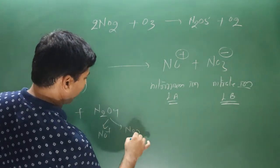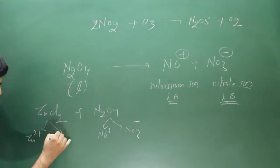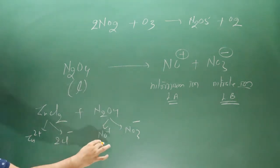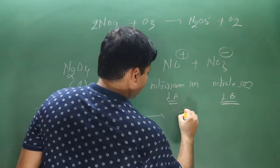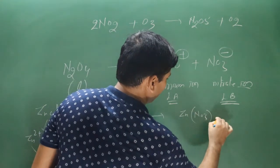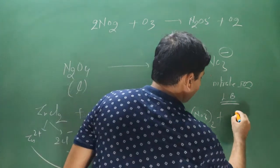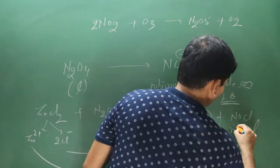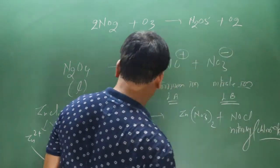For example, zinc chloride reacting with N2O4: ZnCl2 → Zn2+ + 2Cl−, and N2O4 → NO2+ + NO3−. By cross-attraction: Zn2+ combines with NO3− to form zinc nitrate, and NO2+ combines with Cl− to form NOCl (nitrosyl chloride).